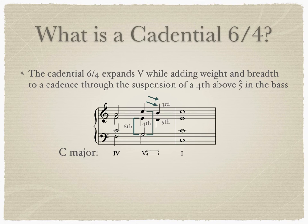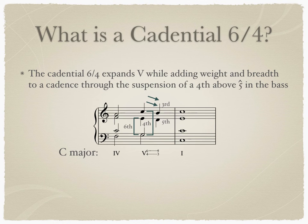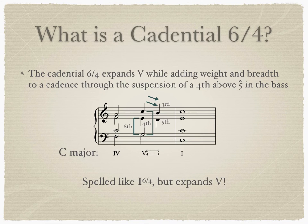Notice that beat 3 is spelled like a tonic triad in first inversion. But since we want to be accurate in our analysis of function, we label it as one Roman numeral with two figured bass symbols. Again, it's not a 1-6-4 because it is an expansion of 5. We will never label it 1-6-4 ever.